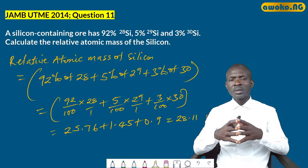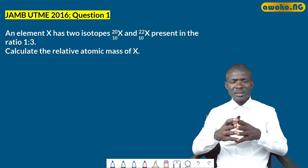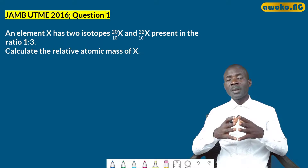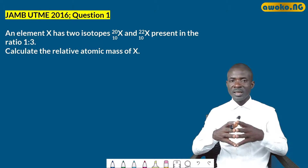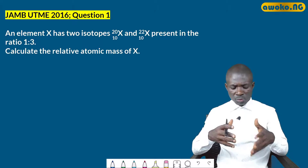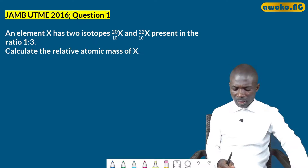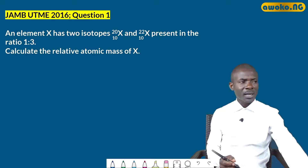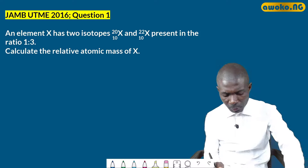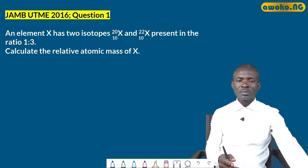The relative atomic mass of an element can be calculated using percentage abundance. Now let's look at another question where we calculate relative atomic mass based on the ratio in which isotopes exist. This is JAMB UTME 2016 question 1: element X has two isotopes, X-20 and X-22, present in the ratio 1:3. Calculate the relative atomic mass of X.